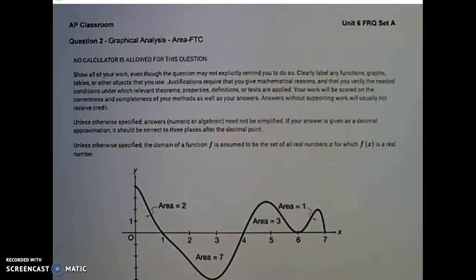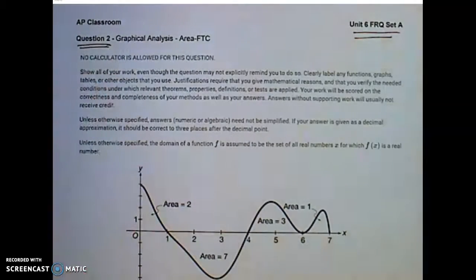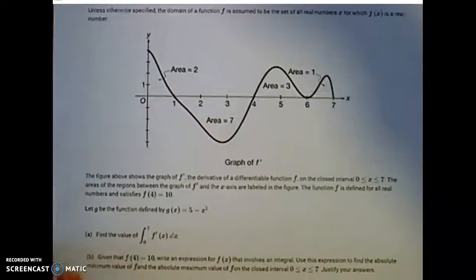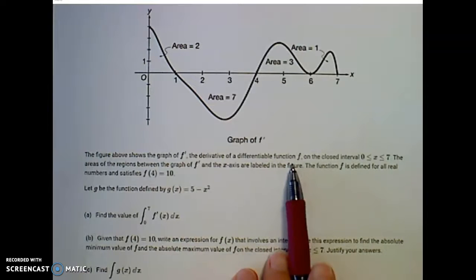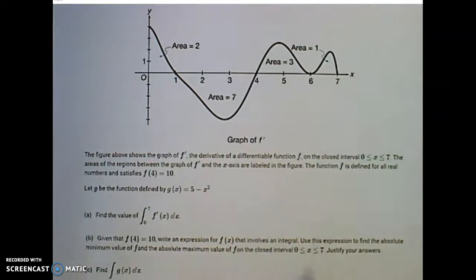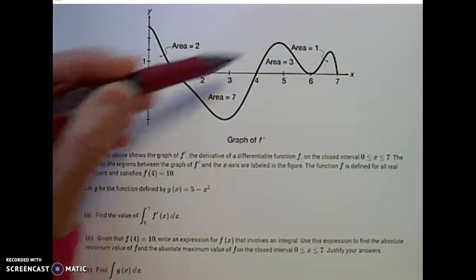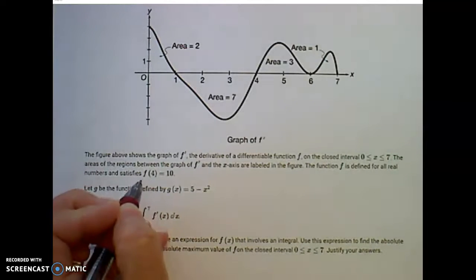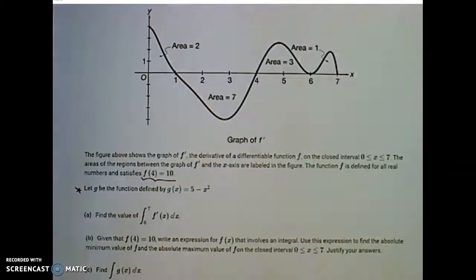Hello, Calculus students. Let's answer any questions that you may have on free response question, Unit 6, Set A. This is question 2. We are given a figure showing the graph of f prime, which is the derivative of a differentiable function f, on the interval from 0 to 7. The areas of the regions between f prime and the x-axis are labeled in that figure. The function f is defined for all real numbers, and we're given that f of 4 is equal to 10. g is some other function defined by g of x equals 5 minus x squared.